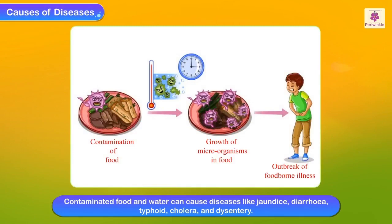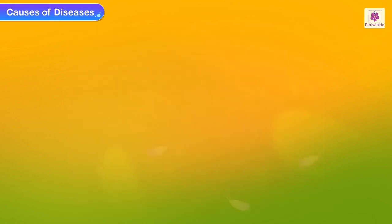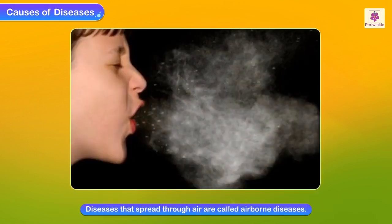Contaminated food and water can cause diseases like jaundice, diarrhea, typhoid, cholera, and dysentery. Diseases that spread through air are called airborne diseases.